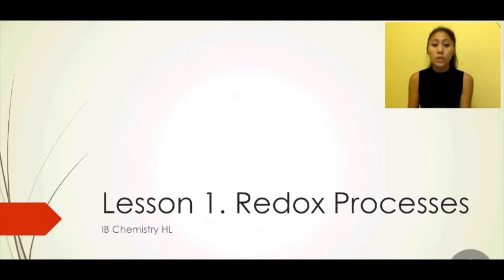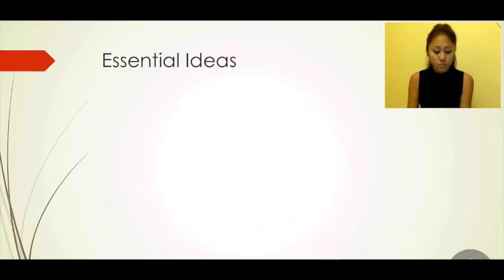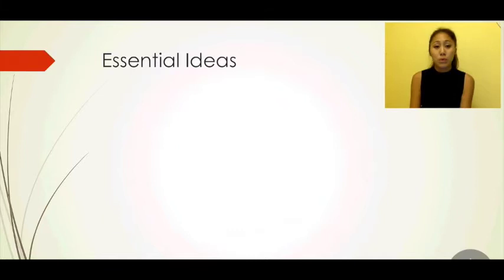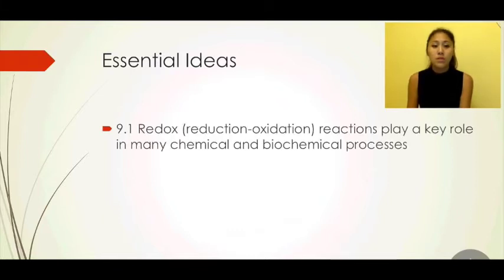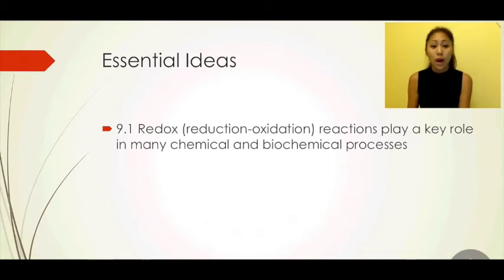We can go deeper into reduction and oxidation. The essential ideas we're going to take away from this unit, as well as topic 19 which is a higher level topic for redox, are 9.1, 9.2, and 19.1. 9.1 tells us that redox reactions play a key role in biochemical processes, and we're going to learn how redox reactions occur and how to write out half equations for these reactions.